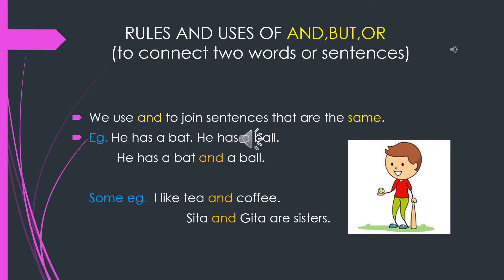Let us see some more examples. I like tea and coffee. Another one: Sita and Gita are sisters.